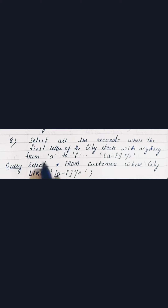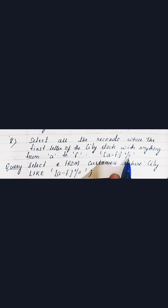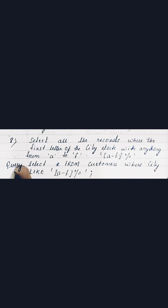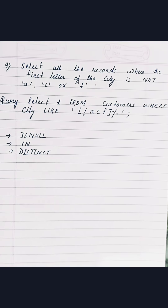Moving to the next question: select all the records where the first letter of the city starts with anything from 'A' to 'F'. Inside the square brackets we write a range 'A-F' to cover all letters in that range, followed by a percent sign. The query is: SELECT * FROM customers WHERE city LIKE '[A-F]%'.